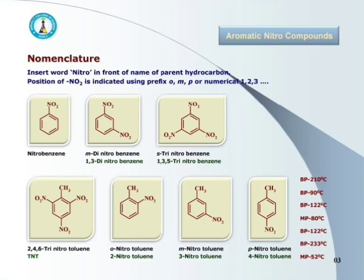For examples: the first is nitrobenzene, where the parent hydrocarbon is benzene and an NO2 group is attached to it. The second is m-dinitrobenzene — two nitro groups, hence 'dinitro', and as the nitro groups are at the meta position, it is m-dinitrobenzene, also called 1,3-dinitrobenzene because nitro groups are present at the 1st and 3rd positions. The third is s-trinitrobenzene, that is symmetric trinitrobenzene, where three nitro groups are present at the 1,3,5 positions, hence also called 1,3,5-trinitrobenzene.